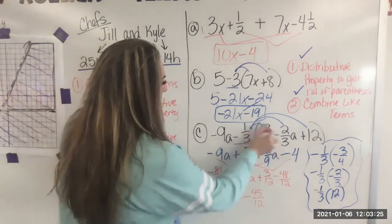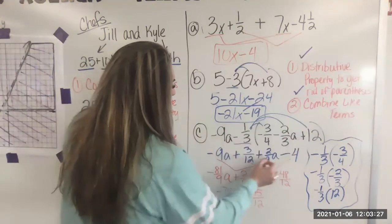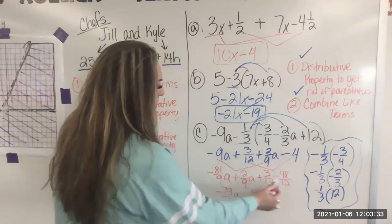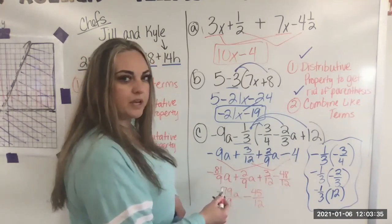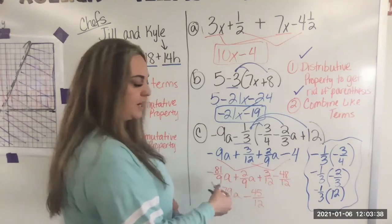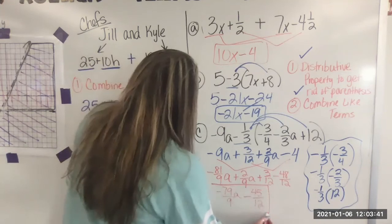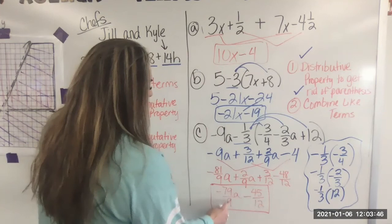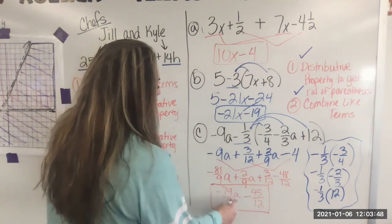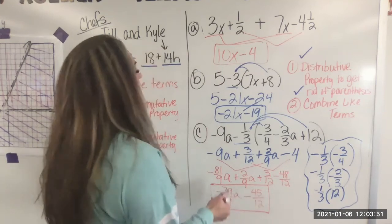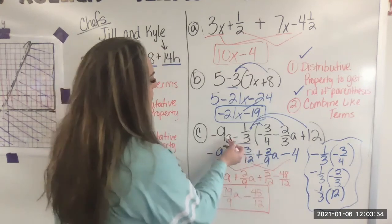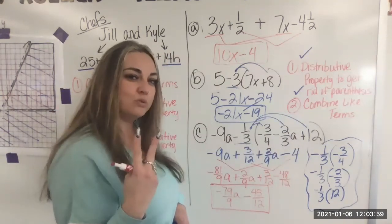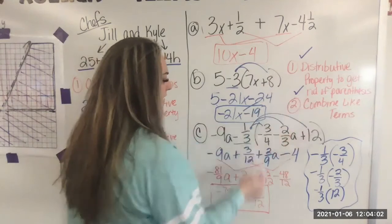So we distributed and rewrote it without parentheses. Then we combined like terms. We had to do some work with getting common denominators because we were working with fractions and we were adding or subtracting them. And then we got our final result, which is just two terms, negative 79 ninths A minus 45 twelfths. So if you think about it, this is really cool. We went from one, two, three, four, five terms, from five down to two by using the distributive property and combining like terms.